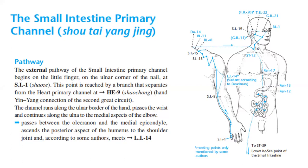This point is reached by a branch that separates from the heart primary channel at Heart 9 — a hand yin-yang connection of the second great circuit. The channel runs along the ulnar border of the hand, passes the wrist, continues along the ulna to the medial aspect of the elbow, passes between the olecranon and medial epicondyle, ascends the posterior aspect of the humerus to the shoulder joint, and according to some authors, meets LI14.